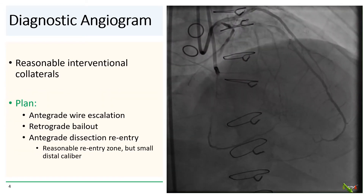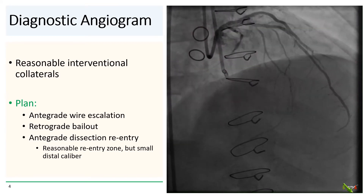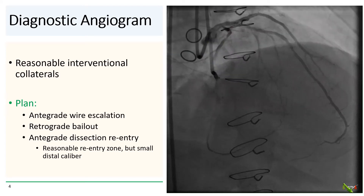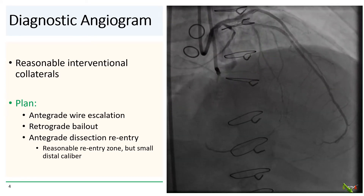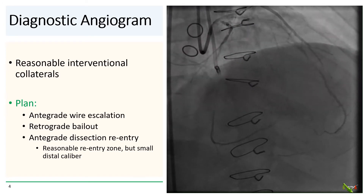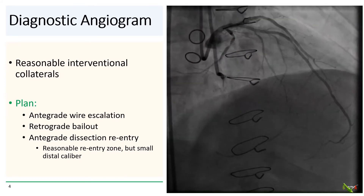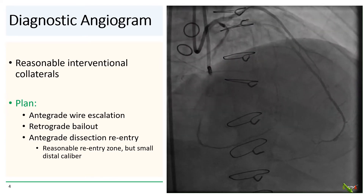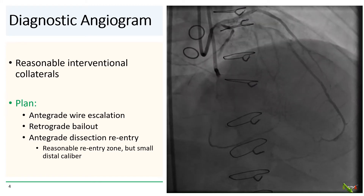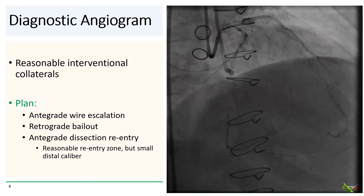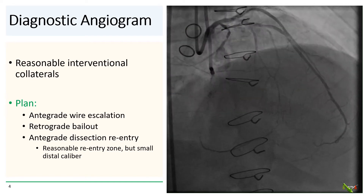In the contralateral view, we see that there are several reasonable septal interventional collaterals that could be used. Our plan was to first start out with a regular antegrade wiring strategy and then switch over to retrograde if that fails. We do typically start with antegrade in nearly all CTO PCI cases since you never know if you might just get lucky and cross.